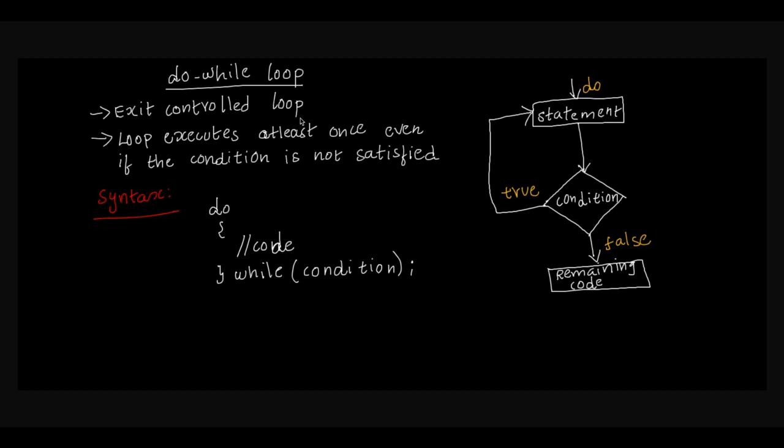Next we need to do the do-while loop syntax, basic program, and flow diagram. The do-while loop is also called Exit Control.